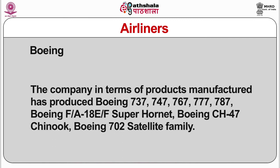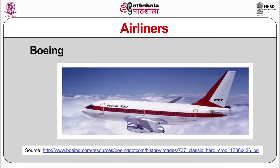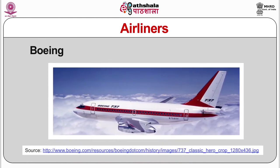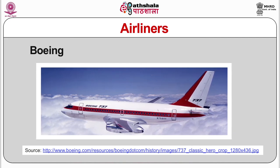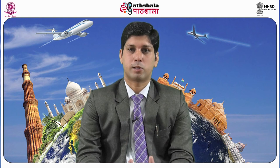Boeing's major products include the Boeing 737, 747, 767, 777, 787, F/A-18E Super Hornet, CH-47 Chinook, and the Boeing 702 satellite family. The company employs around 156,921 people. Divisions include Boeing Commercial Airplanes, Boeing Defence Safety and Security, Boeing Capital Engineering, Operations and Technology, and the Shared Services Group. The company deals in designing, producing, and selling airplanes, rockets, rotorcraft, and satellites.